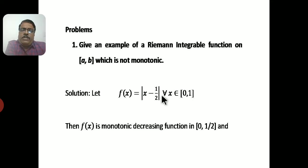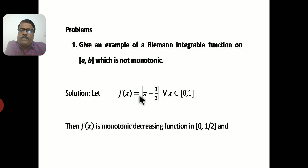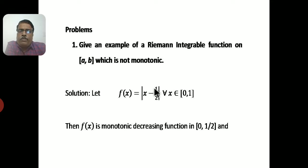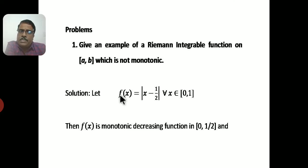When x takes values from 0 to 1/2, f(x) goes on decreasing. For example, f(0) = |0 − 1/2| = 1/2. When x = 1/4, f(1/4) = |1/4 − 1/2| = 1/4. Since 1/2 > 1/4, the function is decreasing. So from 0 to 1/2, f(x) is monotonically decreasing.